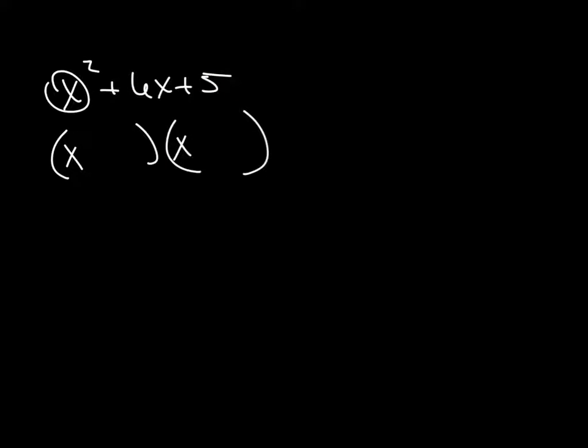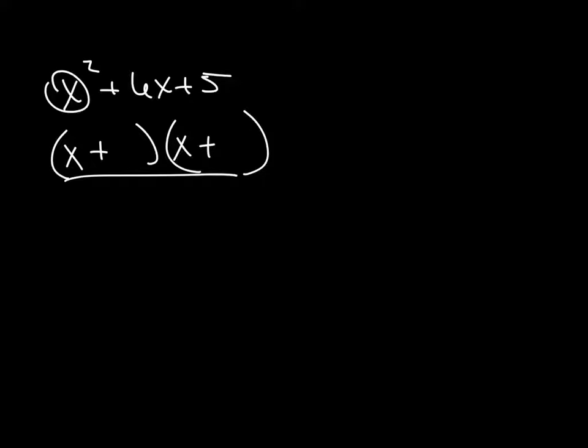The factors of 5 are just 5 and 1. So we know we have a 5 and 1 in there because 5 times 1 is 5, and 5 plus 1 is 6. And because both of these numbers are pluses, we have a plus here and a plus here, and we're done. Sometimes they throw at us something that is a little bit different than what we have right there, and that's what this particular lesson is about.